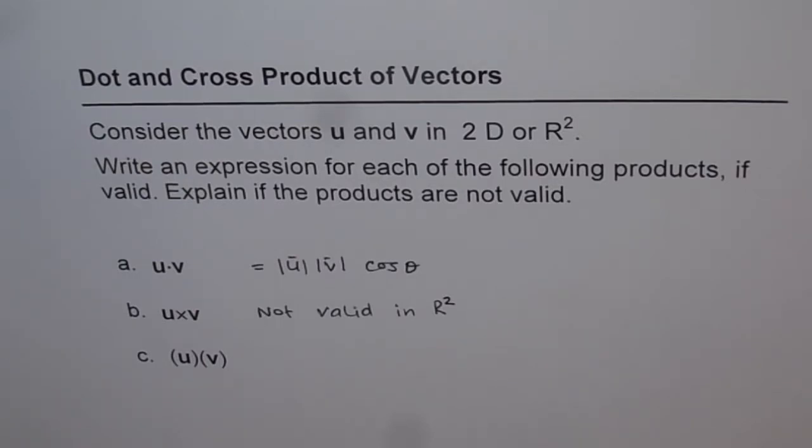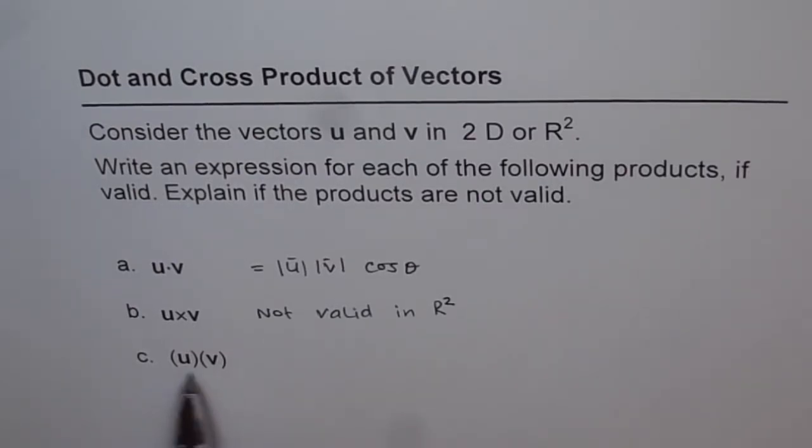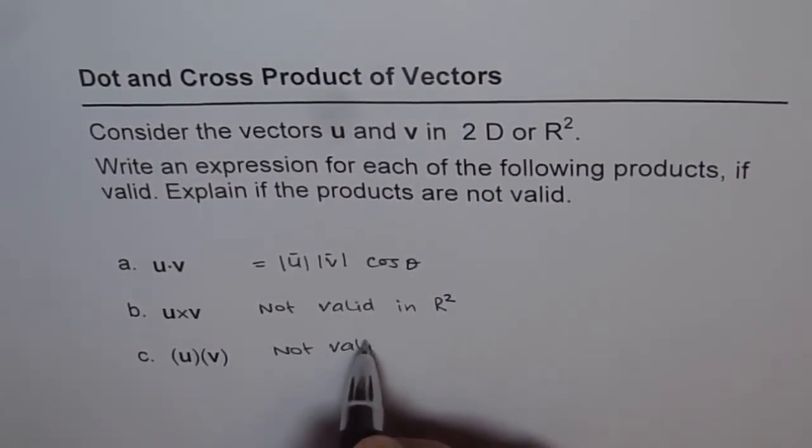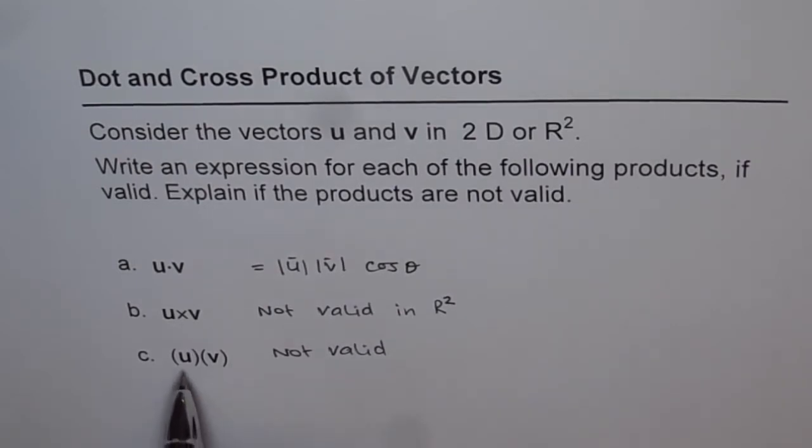Now the third one, u times v, is a product you normally do in mathematics or algebra. This is an undefined statement in vectors. So this is also not valid.